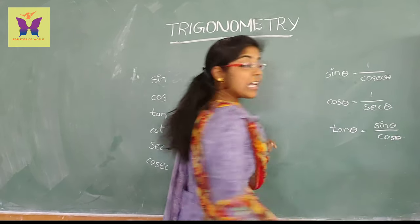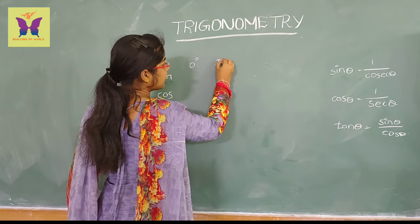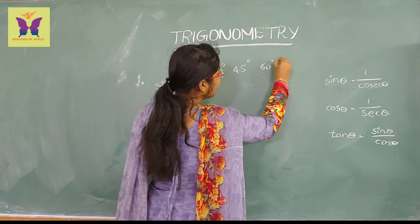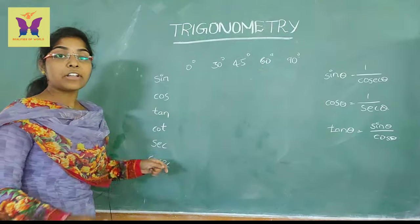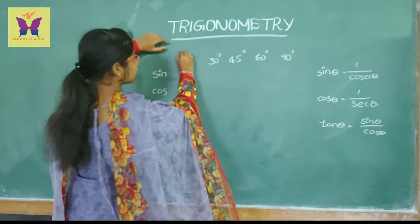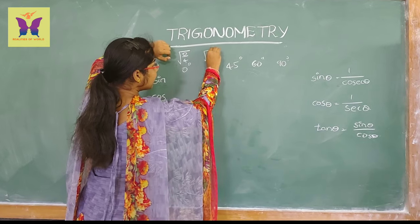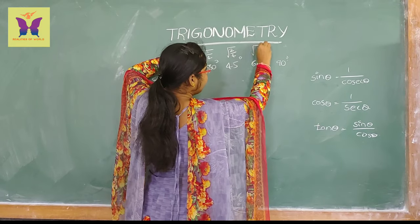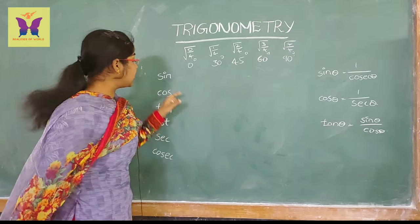This theta value is equal to 0 to 90 degrees. The degree values are: 0 degrees, 30 degrees, 45 degrees, 60 degrees, and 90 degrees. To write the sin and cos values, you want to write root of 0 by 4, root of 1 by 4, root of 2 by 4, root of 3 by 4, and root of 4 by 4.